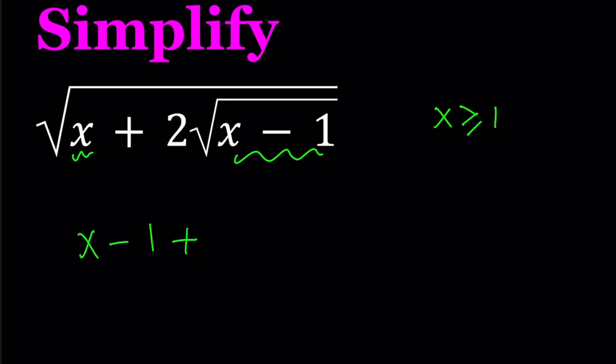And then, of course, you can't just subtract 1, right? You have to add it. And guess what? This gives us a perfect square. And that's perfect.